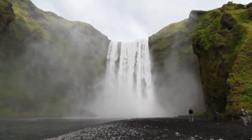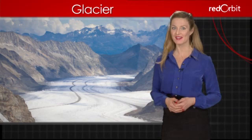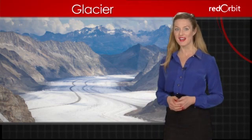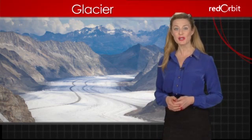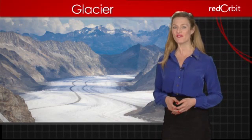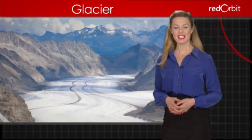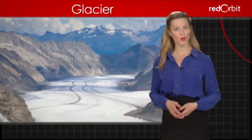Although glacier melt, also called retreat, is a normal part of the water cycle, scientists have noted that glaciers are retreating faster and further than ever, and point to this as evidence of global warming.